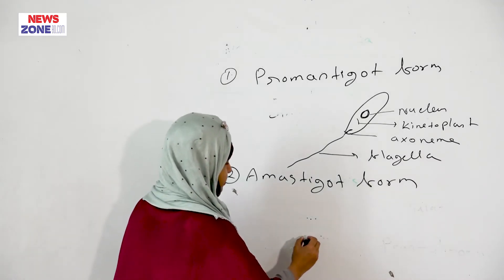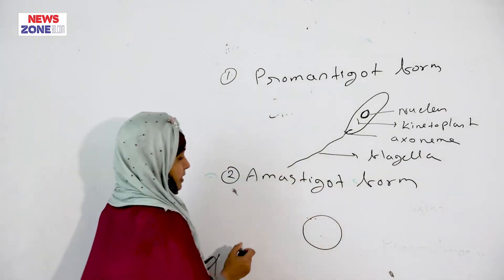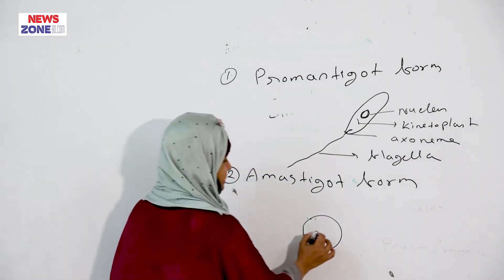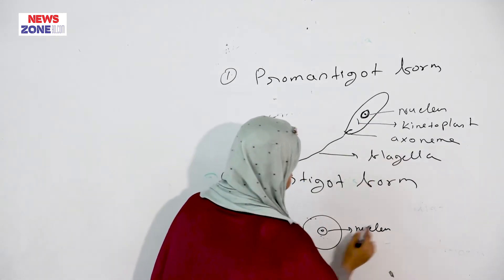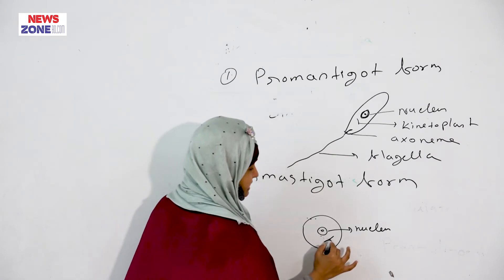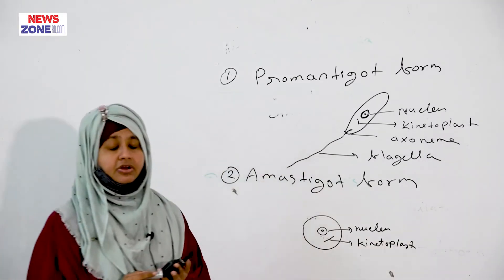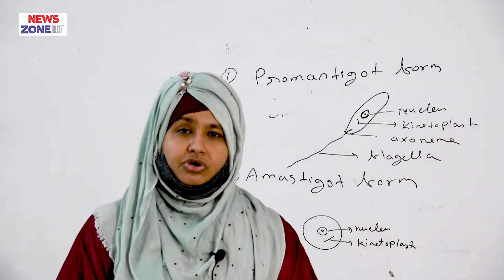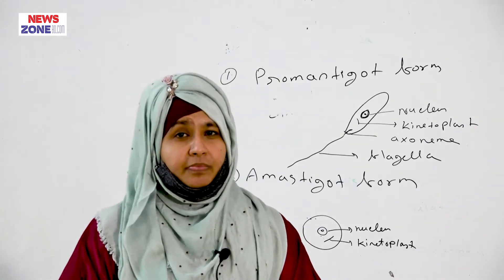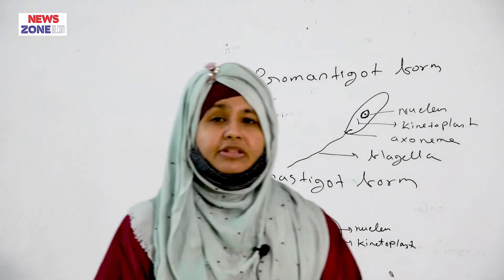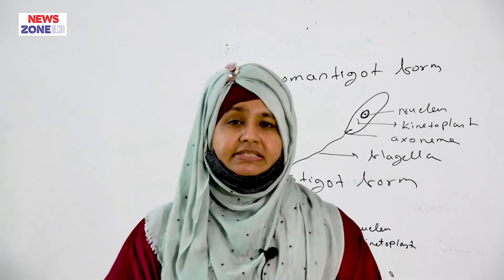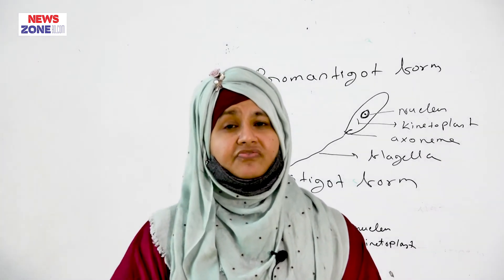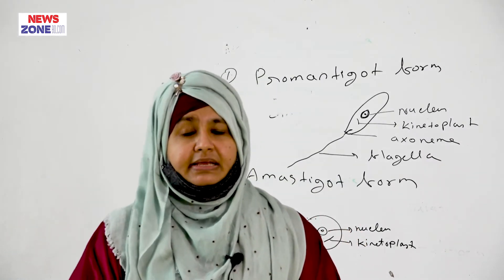The amastigote form has an oval shape and is a non-flagellated form. There is a nucleus and the kinetoplast is obliquely present. The amastigote form remains mainly in humans and is also called the Leishman-Donovan body. The method of transmission of Leishmania donovani is carried out by a species called the sand fly.